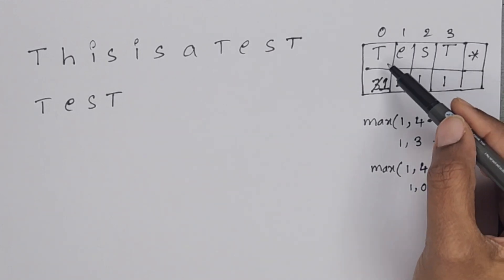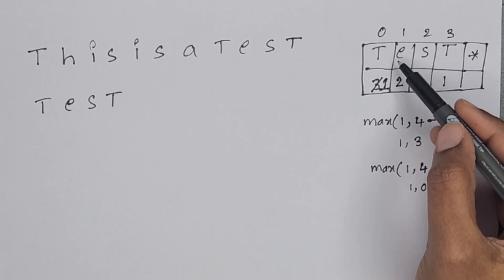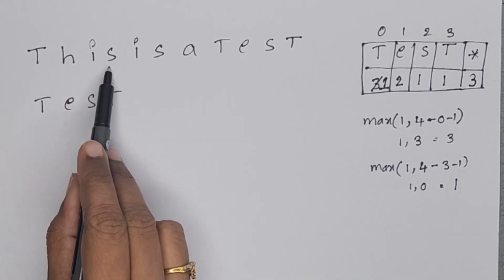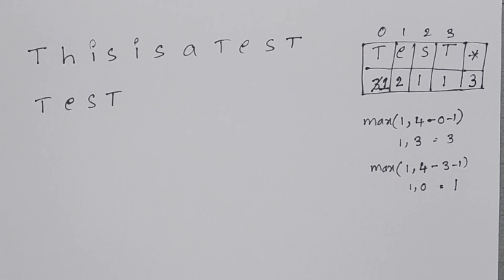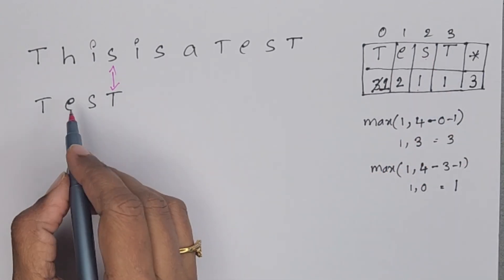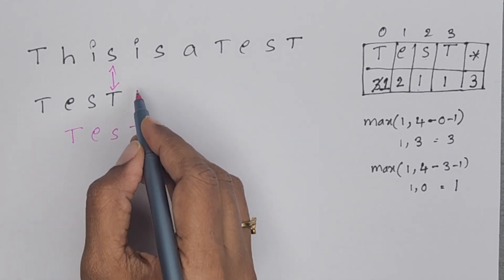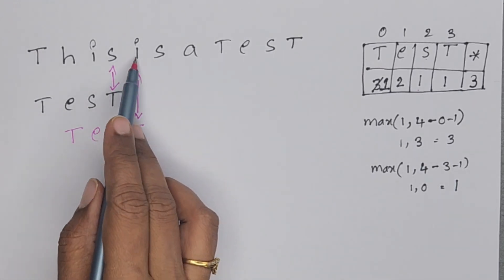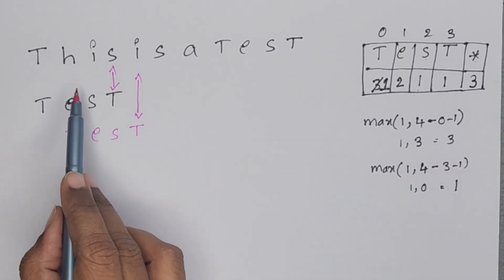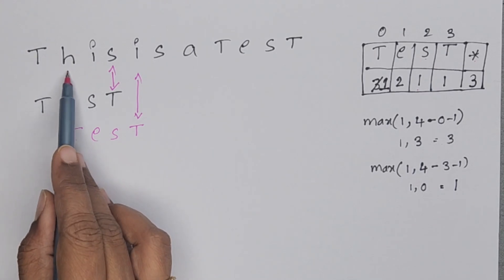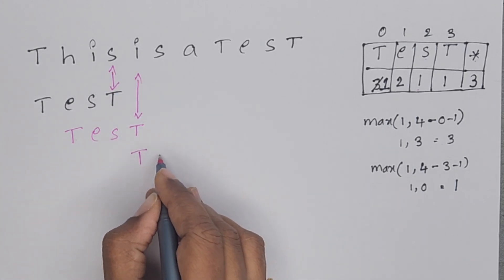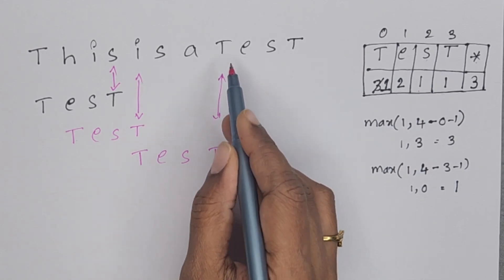For asterisk, different characters are only 3, so we assign 3. Comparison starts from the right characters. T and S are not matching. S is present in the bad match table — S value is 1. We shift 1 character right. The rightmost characters are I and T. I is not present in the table, so we take the asterisk value of 3 and shift 3 characters right — 1, 2, 3. Now comparison starts from here with T-E-S-T. The last two characters T and T are matching.